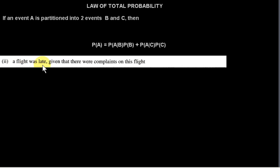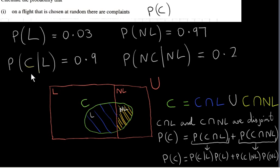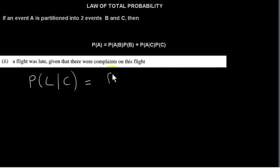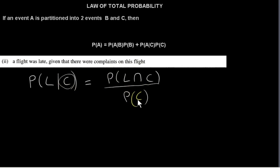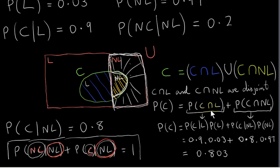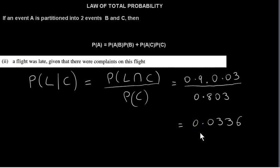Next, we want the probability that a flight was late, given that there were complaints — the probability of L given C. We were given the probability that there were complaints given L is 0.9, but that's not the same as the probability of L given C. Using the conditional probability formula, this equals the probability of L intersecting C divided by the probability of C, which is 0.803. We've already worked out the probability of C intersecting L, so to 4 decimal places, our answer is 0.0336.